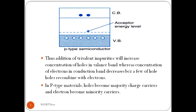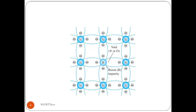The addition of trivalent impurities increases the concentration of holes in the valence band, while the concentration of electrons in the conduction band decreases because a few holes recombine with electrons. In P-type material, holes become majority charge carriers and electrons become minority charge carriers. In the semiconductor crystal, the trivalent impurity displaces a semiconductor atom, forms three covalent bonds, and the fourth covalent bond remains incomplete, acting as a hole. Due to thermal energy, a bound electron from a neighboring atom can jump into the incomplete bond, and the trivalent impurity accepts this electron — hence it is called acceptor impurity.